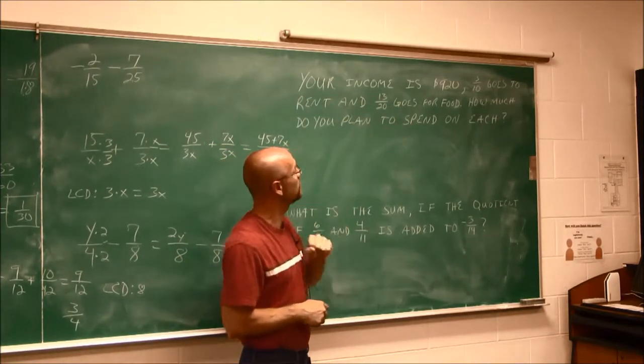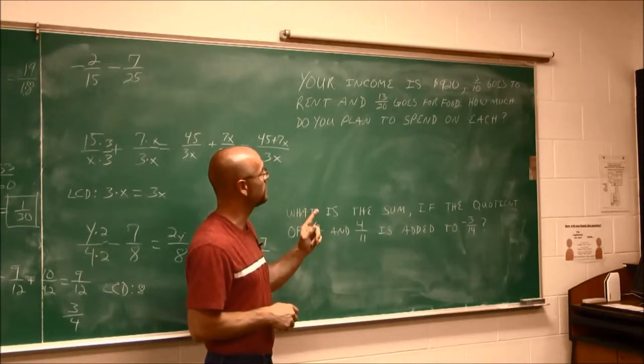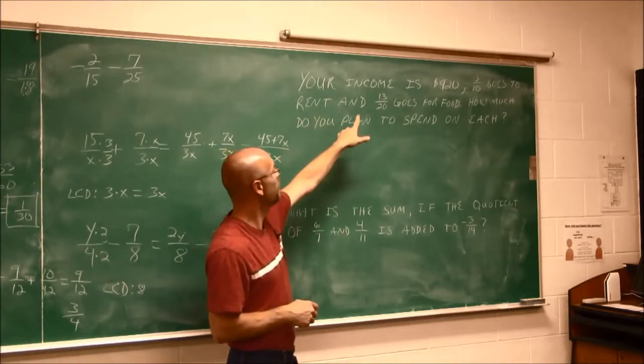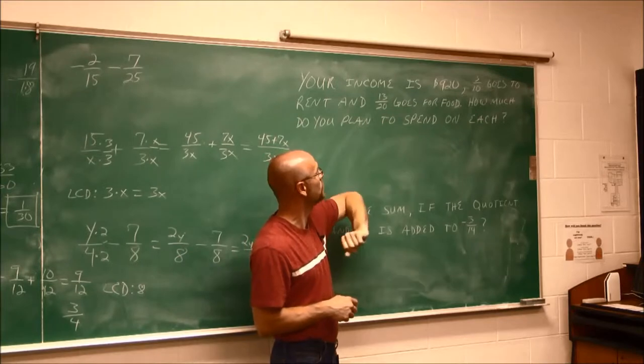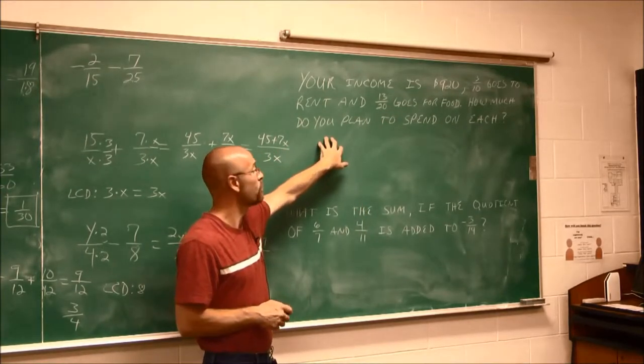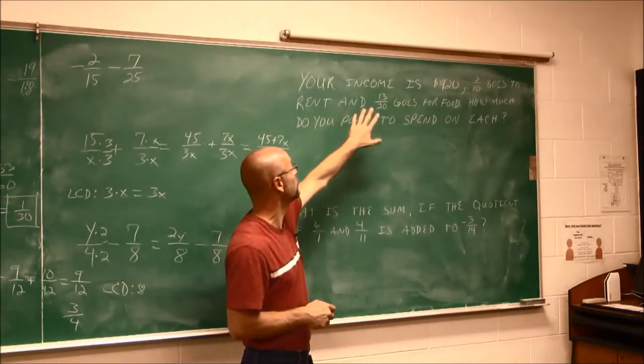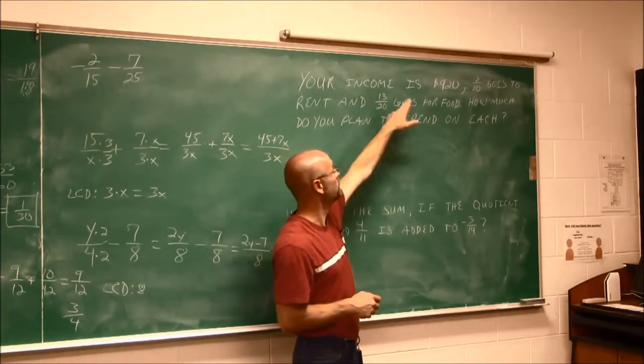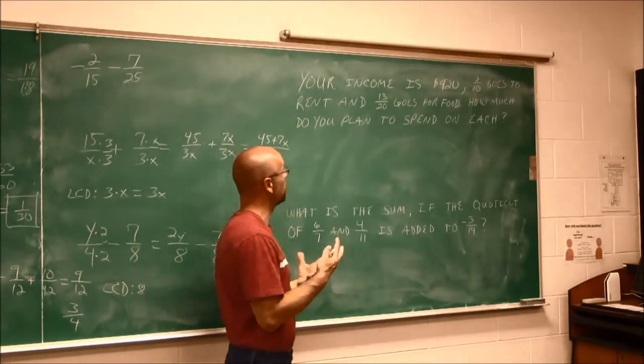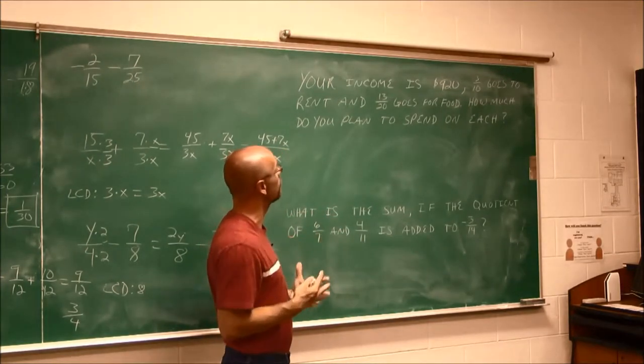So if we look at this, it says your income is $920. 3 tenths goes to rent. And 13 twentieths goes for food. How much do you plan to spend on each? So it wants to know, what is 3 tenths of your income? What is 13 twentieths of your income?